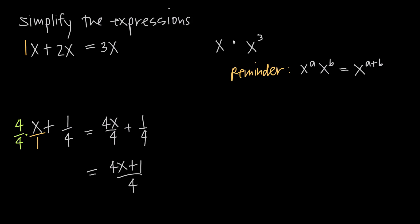In our third example we have x multiplied by x cubed. We need to remember that we have this understood 1 — this x term is just x to the first power, the same way that x cubed is x to the third power. So we have x to the first times x to the third. Using the exponent rule: when we have like bases, x to the a times x to the b equals x to the a plus b, we add the exponents. So we get x to the 1 plus 3, which is x to the fourth.